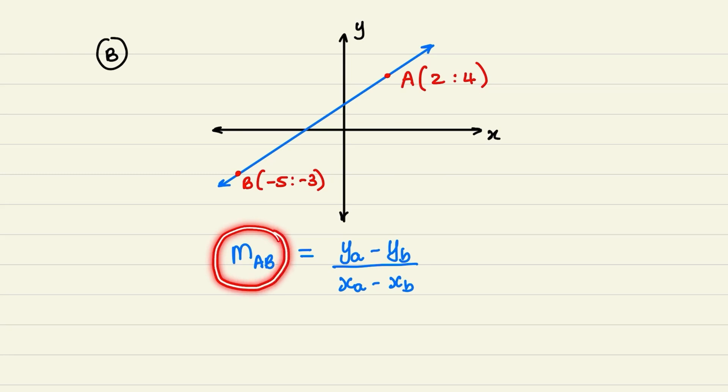Now, in order for us to find the gradient between points a and b, we need to use the gradient formula, which is the difference of y's over the difference of x's. So I'll have the y value of a and subtract the y value of b. And then in the denominator, the x value of a and I subtract the x value of b. Notice in the formula that I'm using coordinate a first and then thereafter coordinate b. The order does matter in the gradient formula.